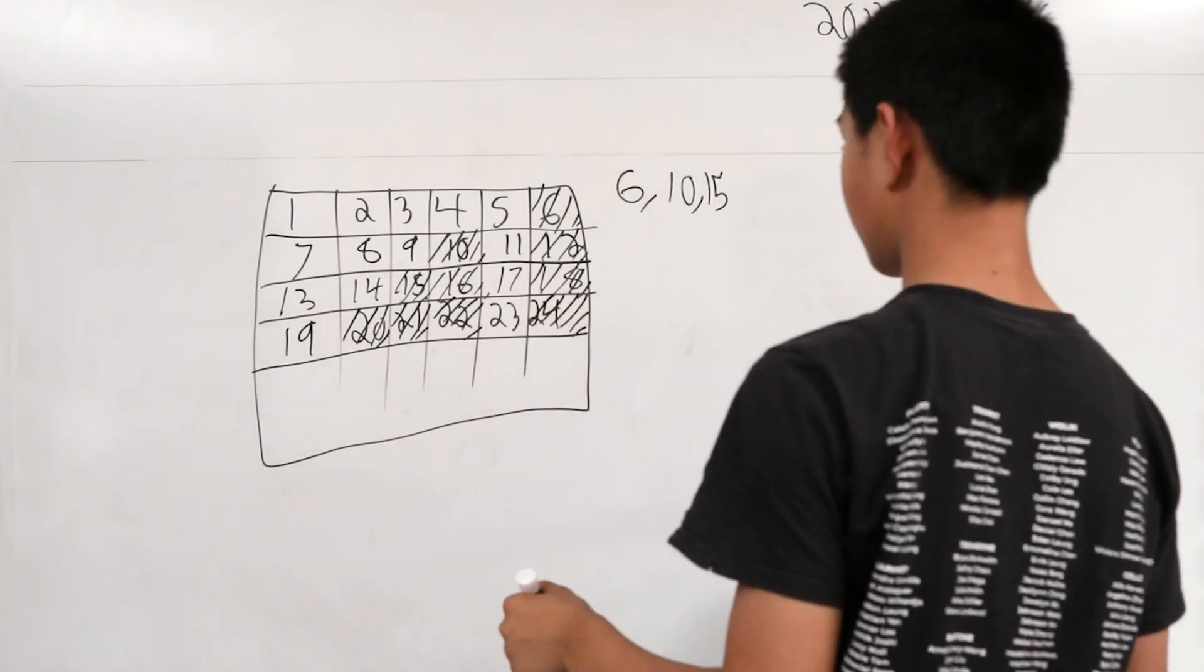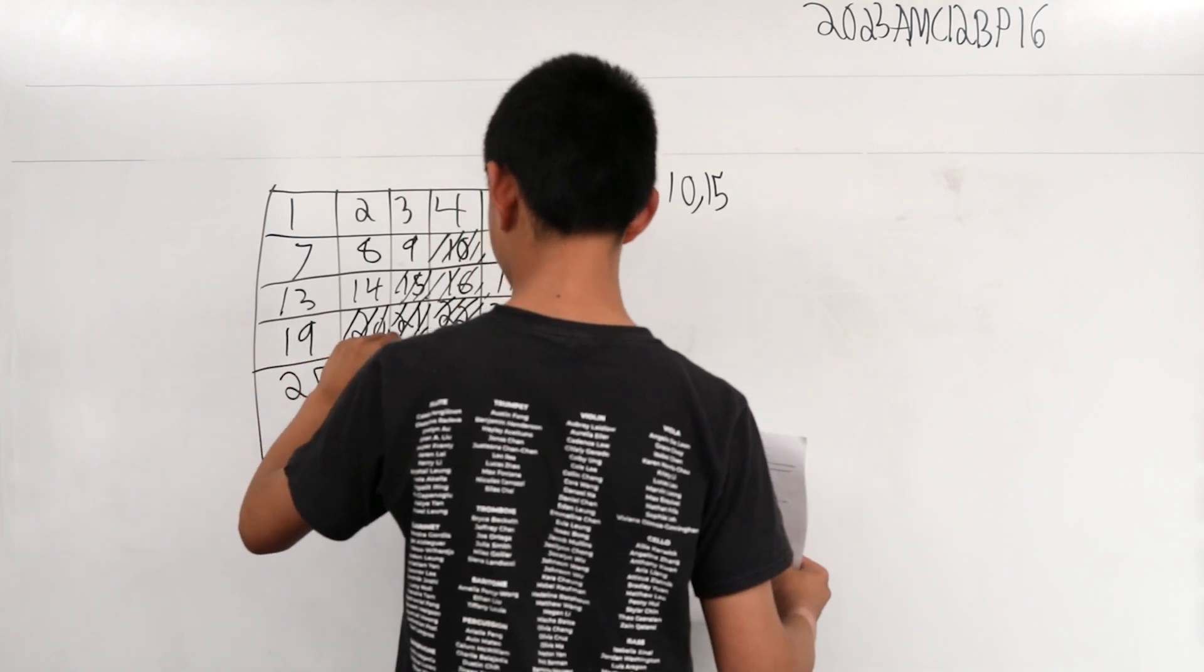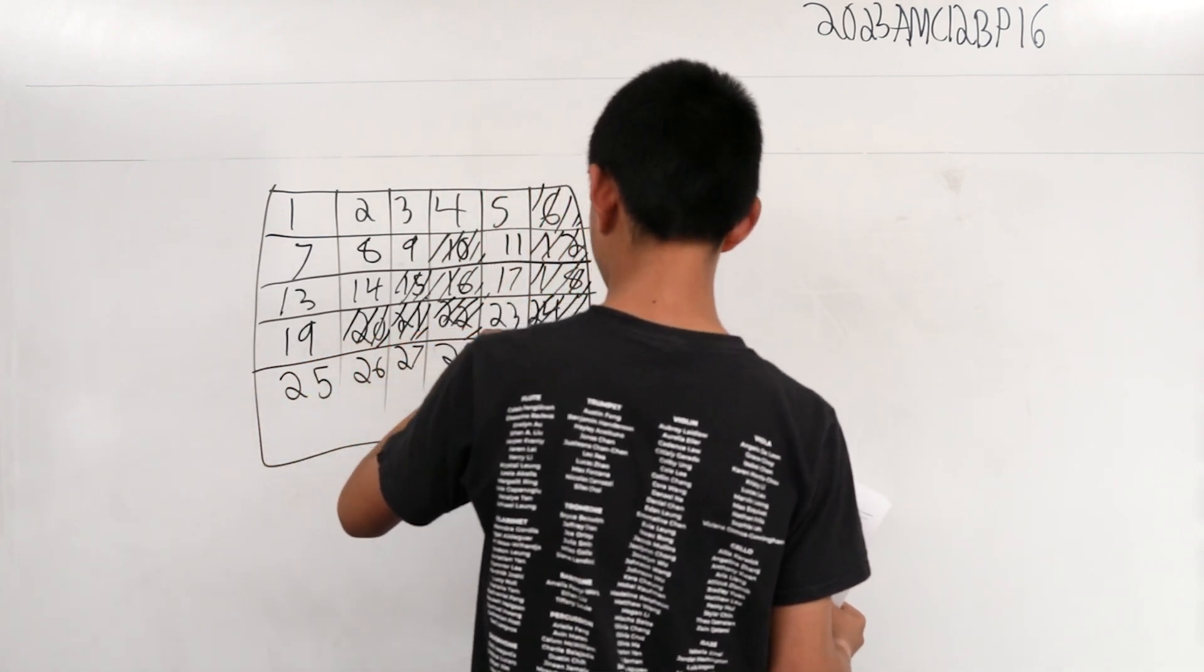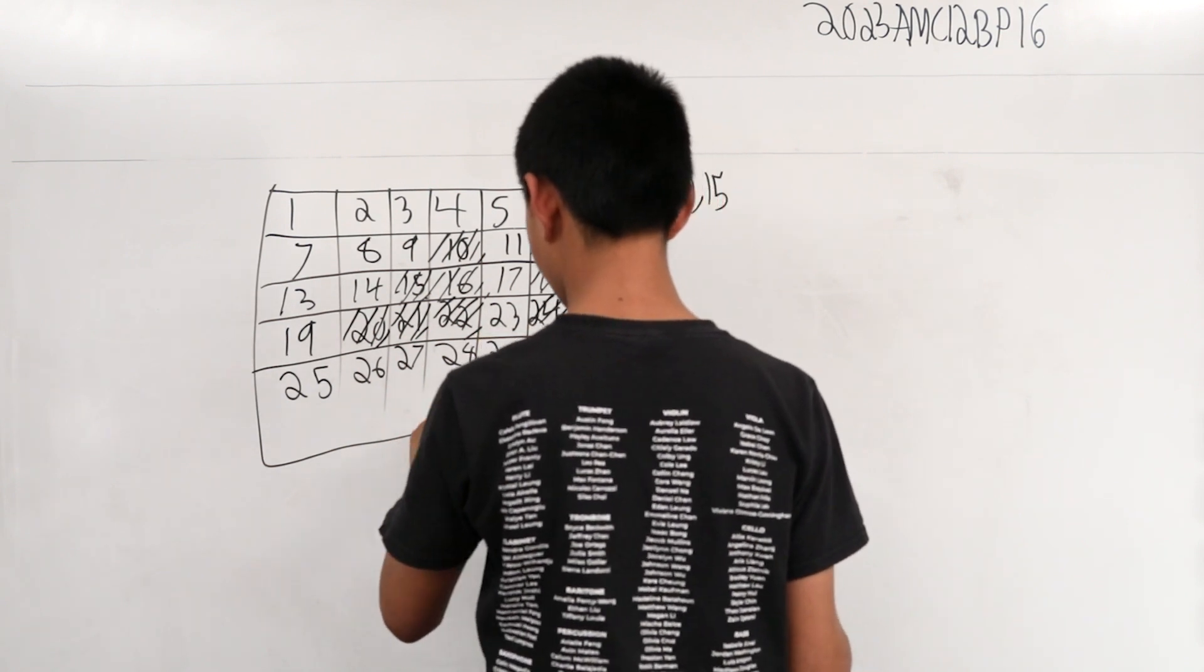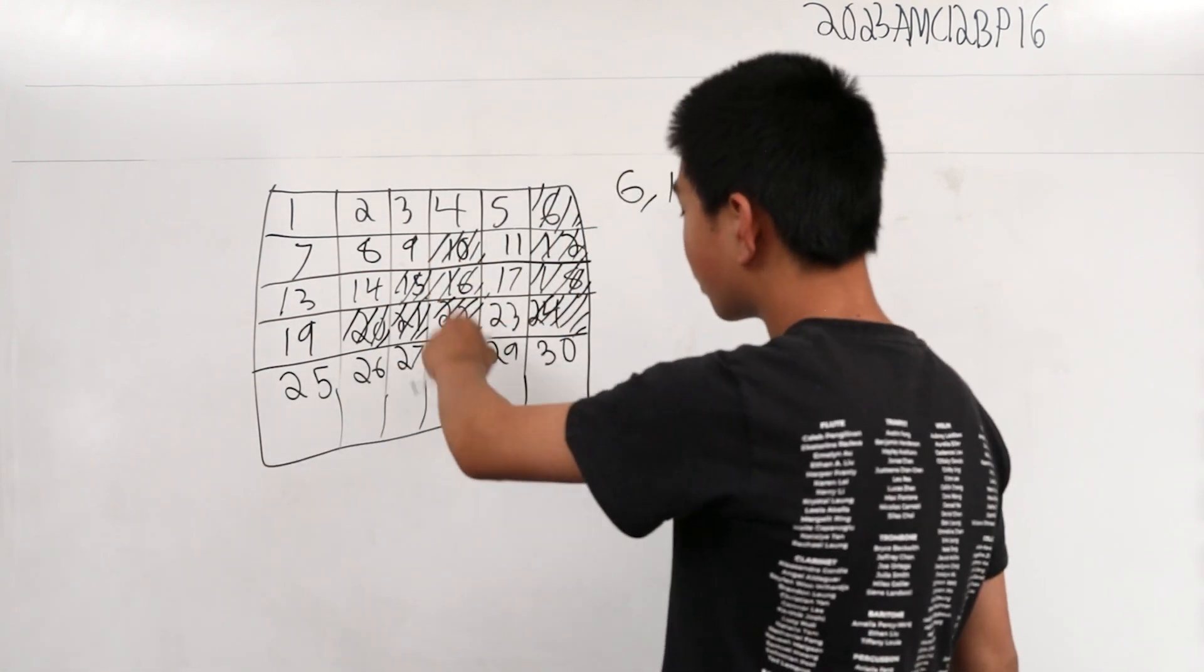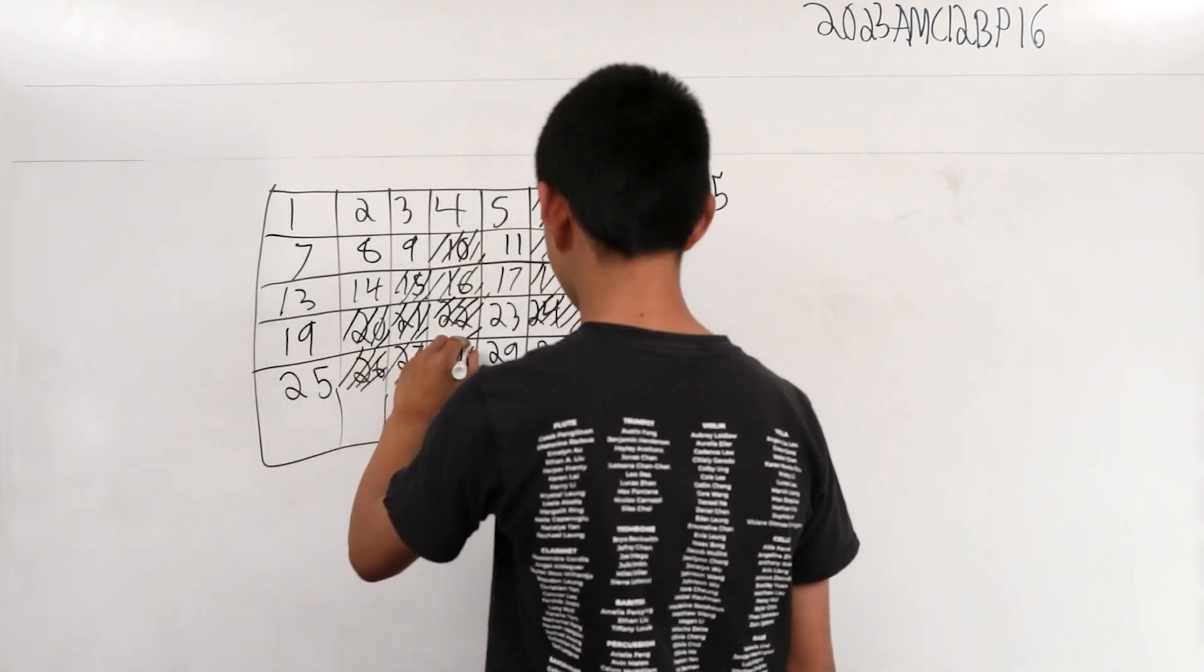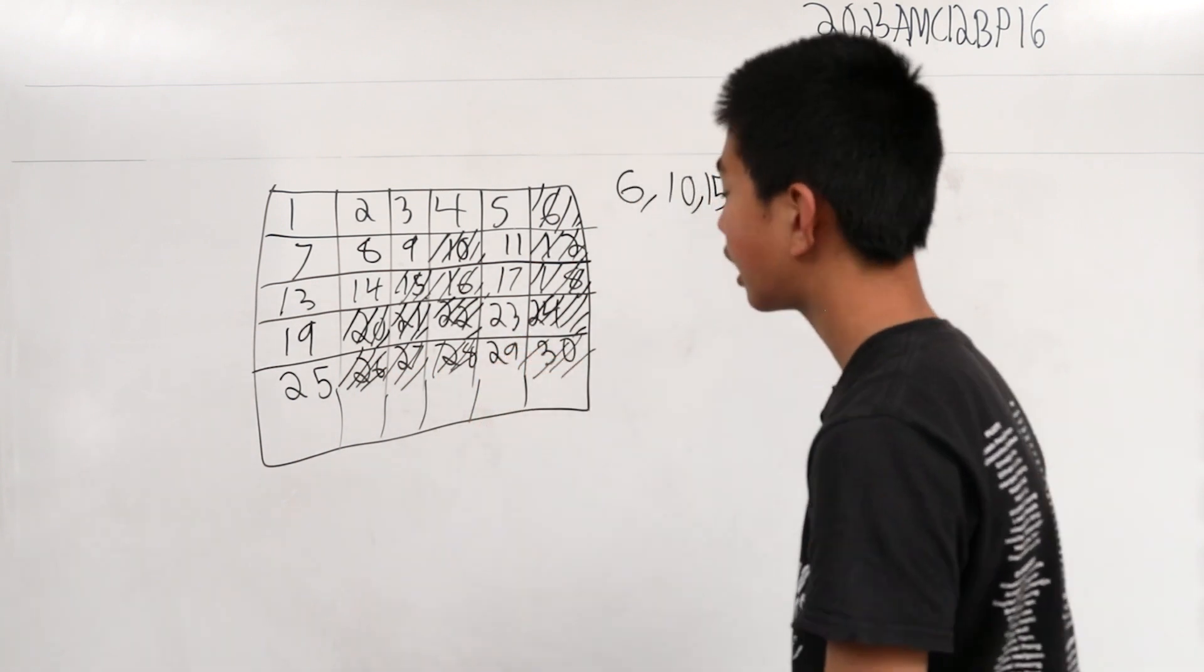Now if we go to 25, 26, 27, 28, 29, and 30. This is the fifth column, and you might see a pattern emerging. When a number gets marked, all the numbers below it get marked. So we can cross out 26, 27, 28, and 30. What about 29?